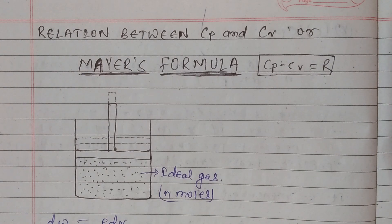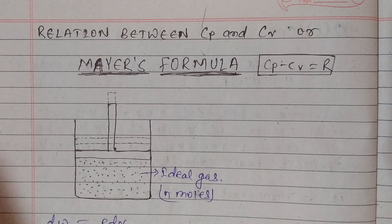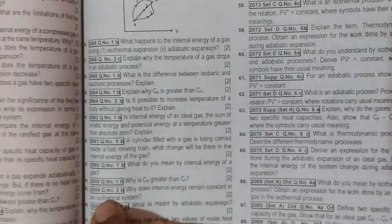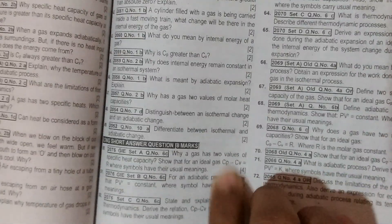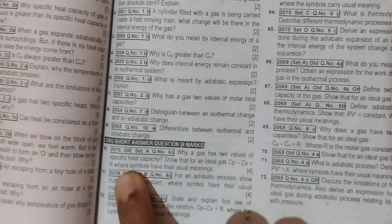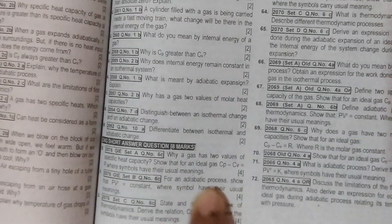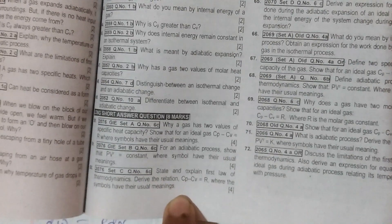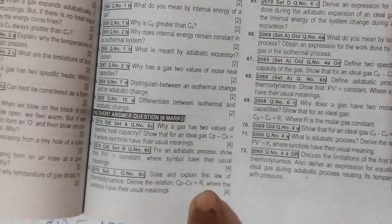In the 12th final, we have a very important question in the first law of thermodynamics. It's a very repeated question. We have to prove that CP minus CV equals R. We have to derive this relation. It's a mostly repeated question in the 12th board.